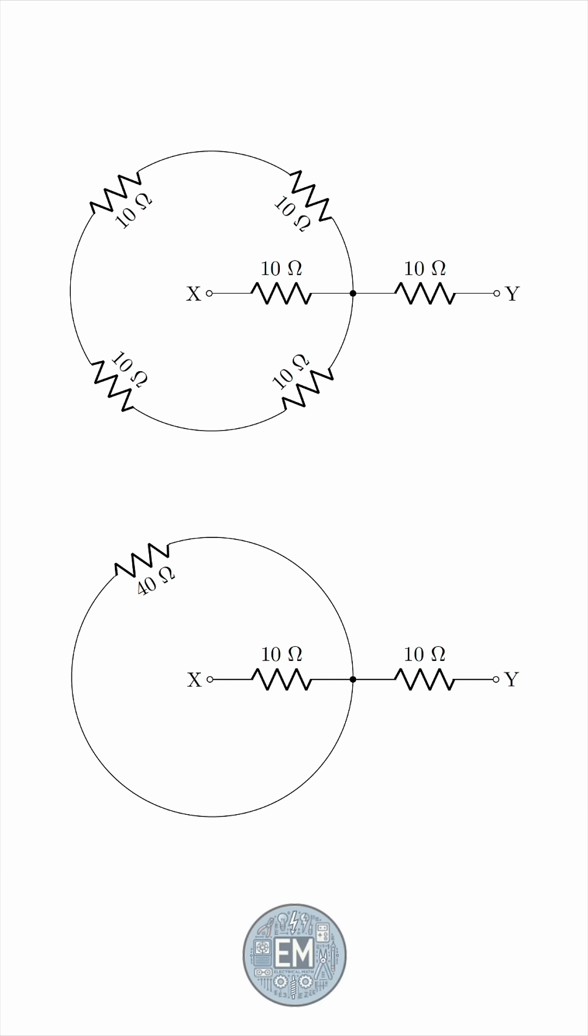The circular path is actually completely useless. If there was a voltage source driving current flow from X to Y, then the current leaving terminal X will reach terminal Y in its entirety, and the circular path is completely redundant.